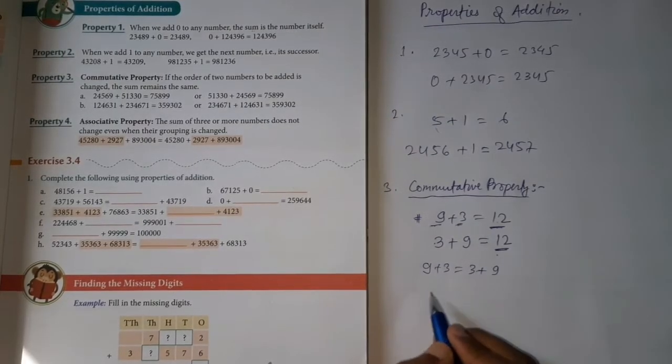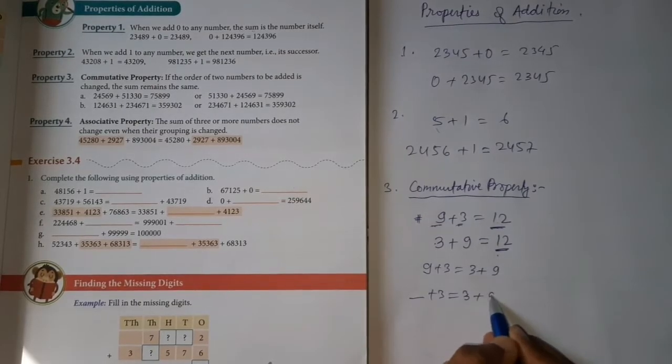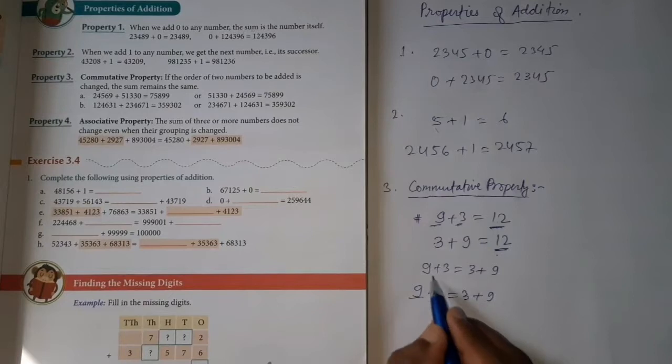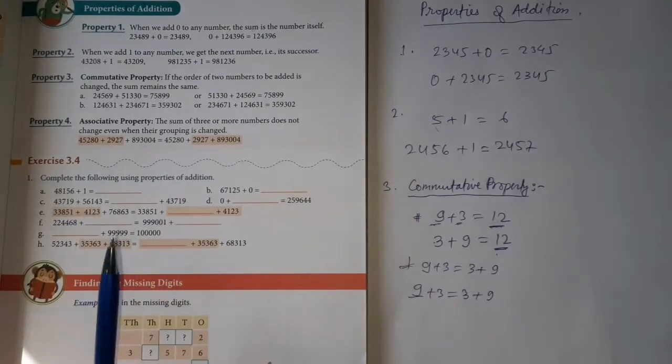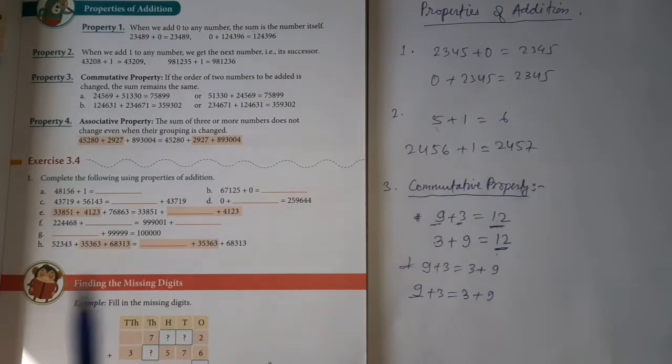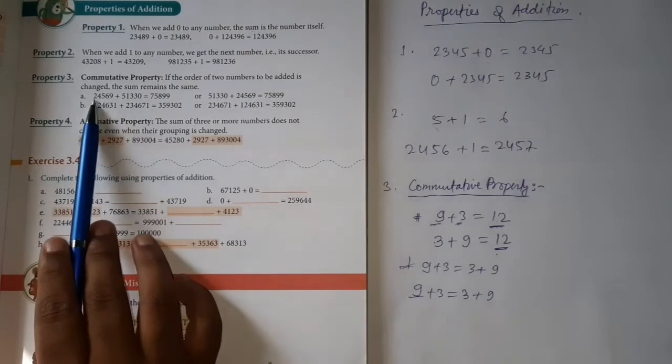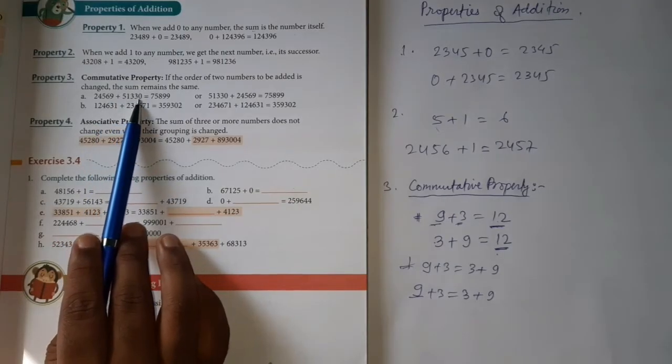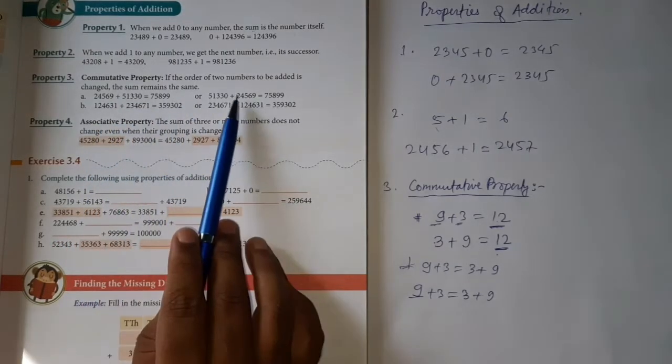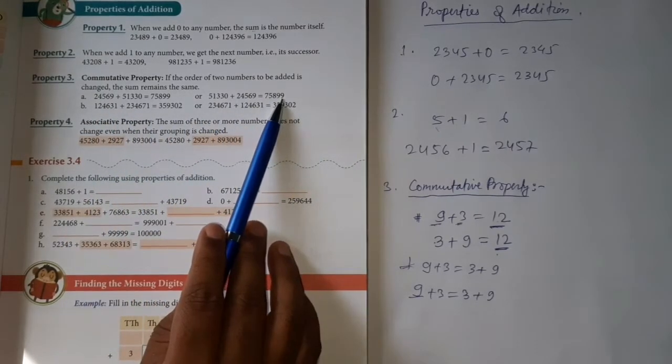If you change the order of two numbers in addition, the answer will remain the same. So I can write this: nine plus three is equal to three plus nine. Is it okay? So if you have nine plus three here and three plus nine here, what happens? You get nine. This is commutative law, which you have to use to fill up exercise 3.4. If you change the order of numbers in addition, there will be no difference.